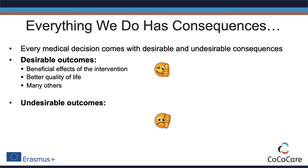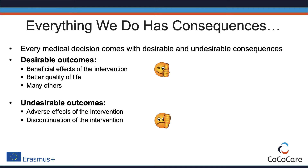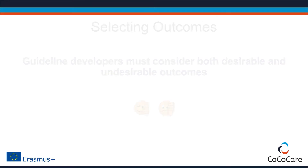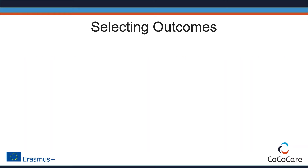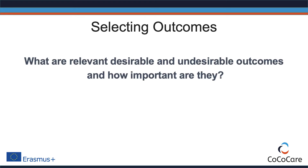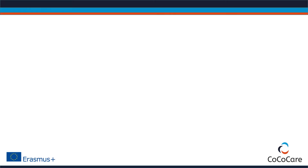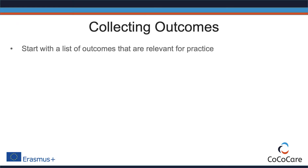Undesirable outcomes involve adverse effects, discontinuation of intervention, cost of treatment, and many others. Guideline developers always have to make sure that they consider both desirable and undesirable outcomes. Guideline panels have to deal with the question of what desirable and undesirable outcomes are and how important they are for decision-making. The first step is to start with a list of outcomes that seem relevant for practice.